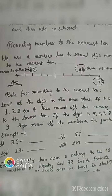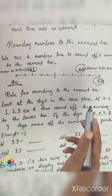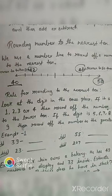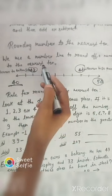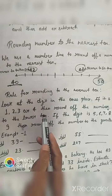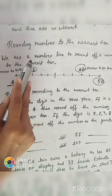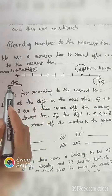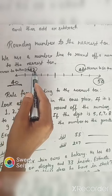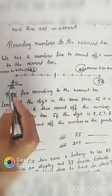The rule for rounding to the nearest ten: look at the digit in the ones place. If it is 1, 2, 3, or 4, then round off the number to the lower ten — round down. We can see here in 42, the ones digit is 2. So we will round 42 down to 40.